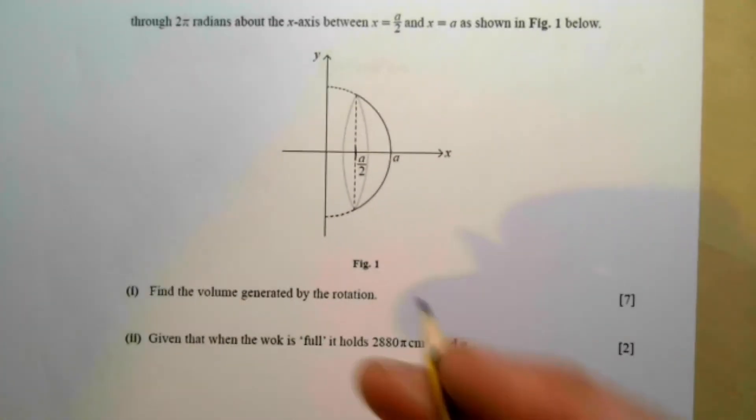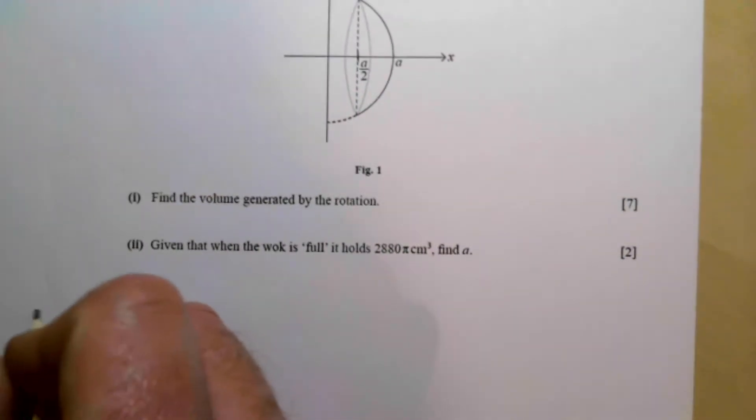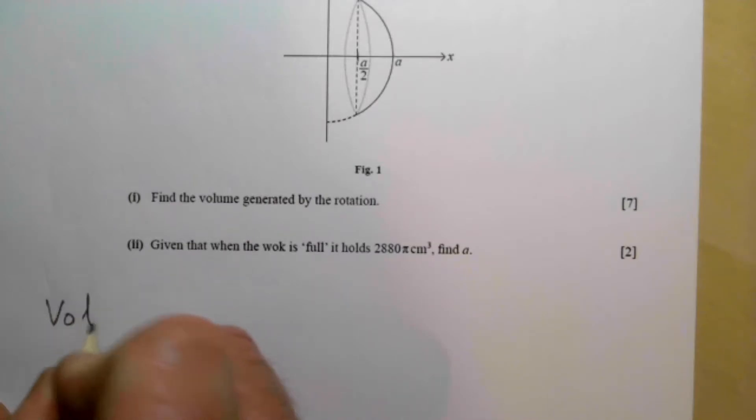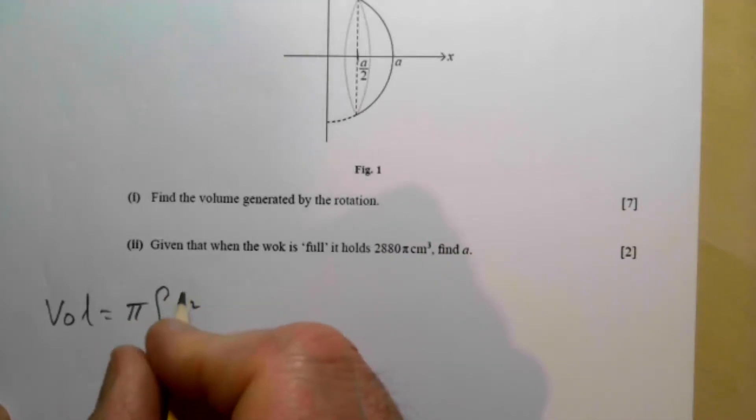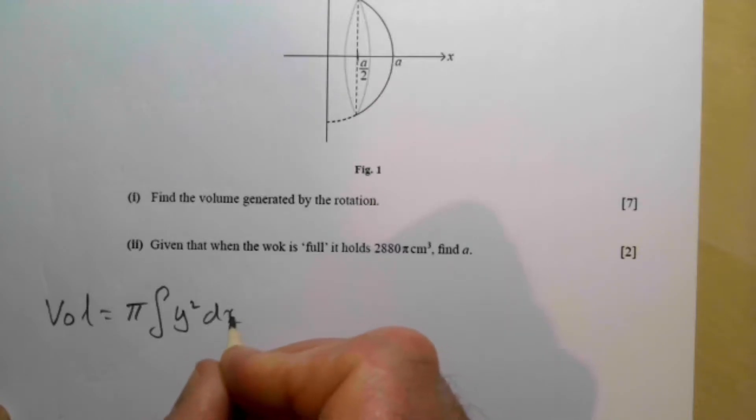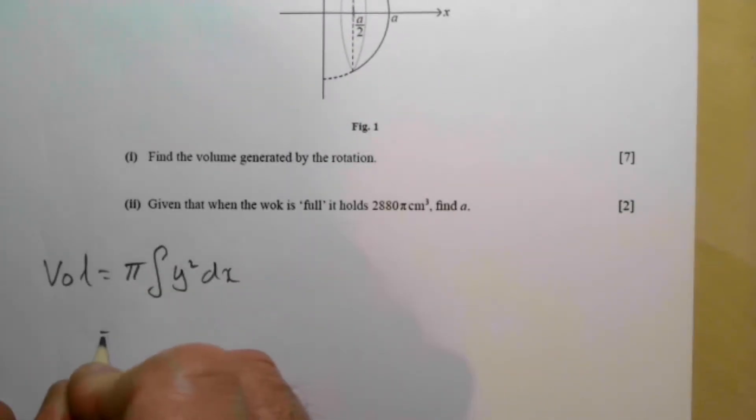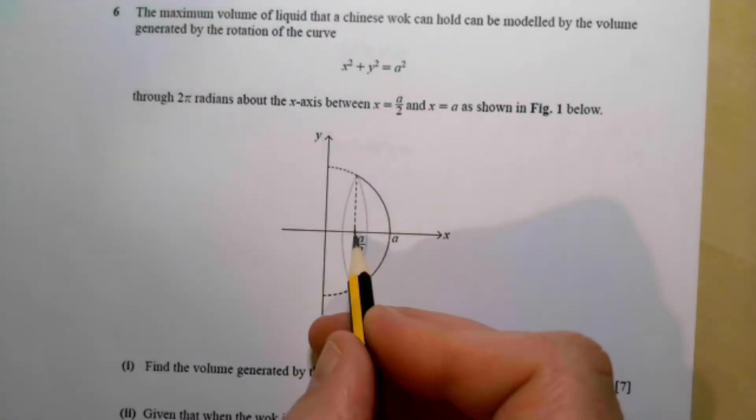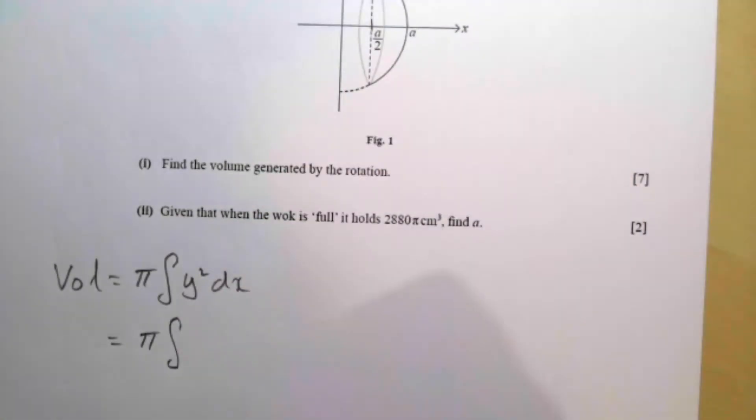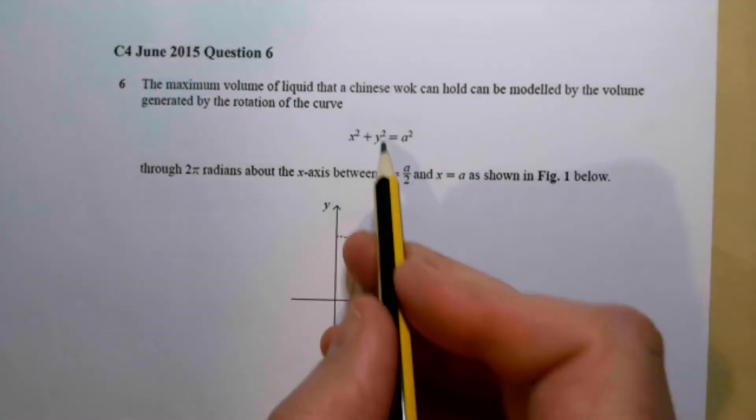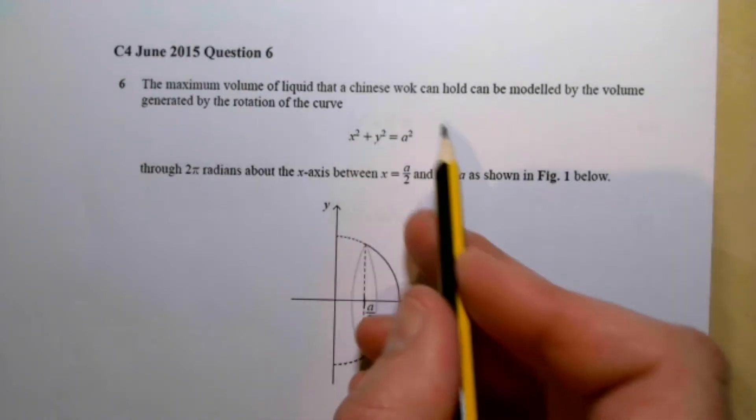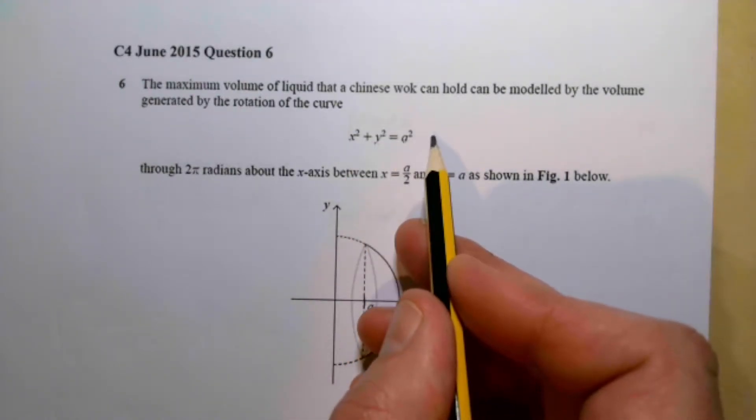So our formula for finding volume by rotation is volume equals pi times the integral of y squared dx. So in this particular case, it's going to be pi between a and a over 2. And then we need to find our y squared, so we need to take the x squared to the other side, so it's going to be a squared minus x squared.